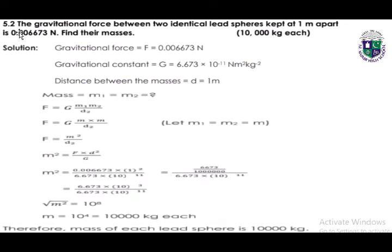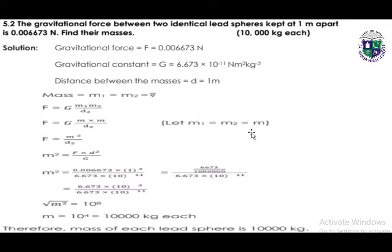Question 5.2: the gravitational force between two identical lead spheres kept one meter apart is 0.006673 newtons; find their masses. The gravitational force is given, G is known, the distance between the masses is 1 meter, and we have to find m1 and m2. We will use the same gravitational force formula.